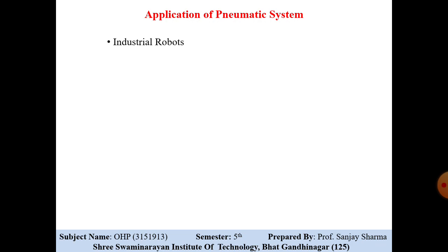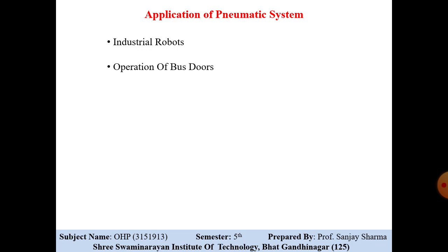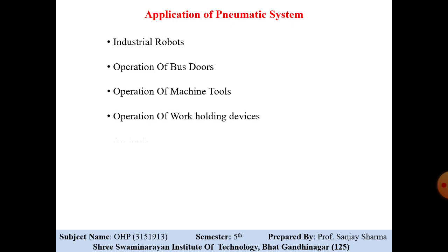Now, what are the applications of pneumatic systems? You may be familiar with these applications from daily life. For example, if you are traveling through a BRTS bus, the doors are automatically controlled — pneumatic cylinders are used there. Industrial applications include industrial robots, operation of bus doors, operation of machine tools, operation of work holding devices, and air tools.